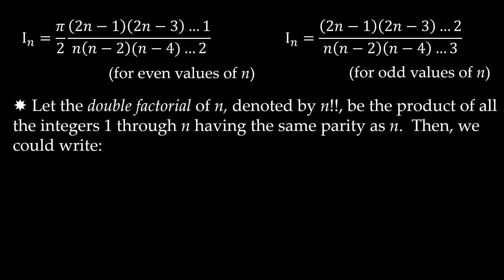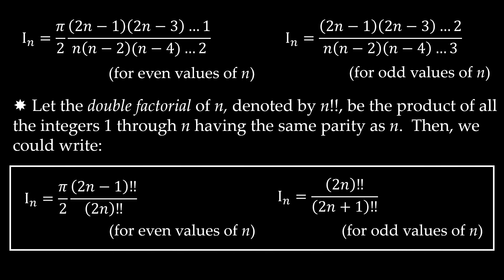Finally, for the sake of making this more compact, I'd like to introduce the double factorial notation. The double factorial of n, denoted n!!, is simply the product of integers 1 through n having the same parity as n. Using this notation: if n is even, Iₙ equals π/2 times (2n−1)!! over (2n)!!; if n is odd, Iₙ equals (2n)!! over (2n+1)!!. So there we have it — these are Wallis' integrals. If you enjoyed the video, please subscribe and give me a like. Thank you very much.